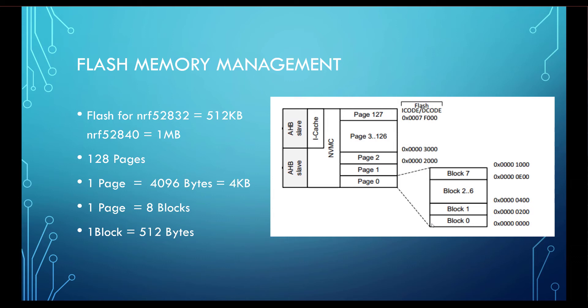The minimum unit we can write to flash memory is a word, which contains 32 bits. Keep this in mind: whenever we are writing to flash memory, we have to write at least 32 bits. If we directly try to write 8 bits into a 32-bit space, it will give us an error. There is a specific function that handles this.